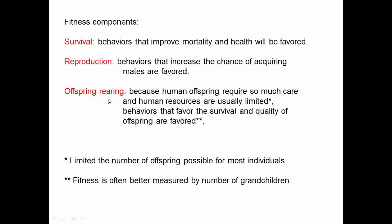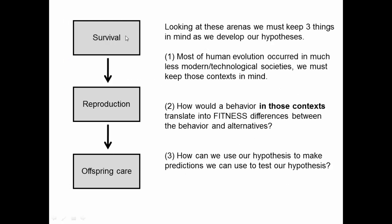This third factor — offspring care — is more important for humans than for many other animals because there can be such differences in the quality of offspring produced through childcare, since childcare is so extensive. Keep survival, reproduction, and offspring care in mind as we develop some hypotheses.